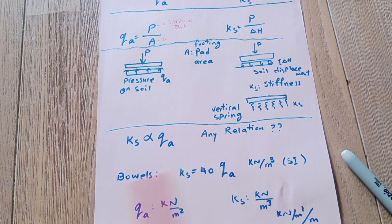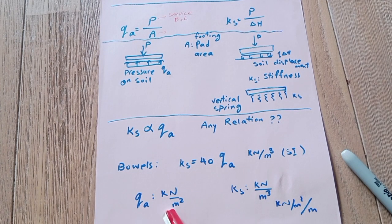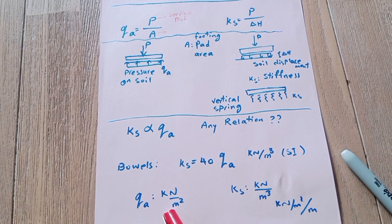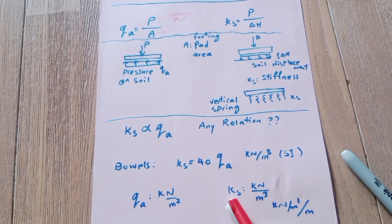The last point: qa is pressure in kilonewton per square meter or kPa, and subgrade modulus is kilonewton per cubic meter, or kilonewton per square meter per meter. It is spring stiffness.